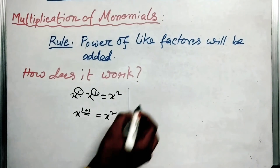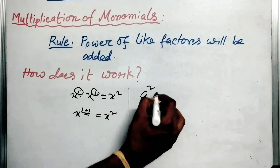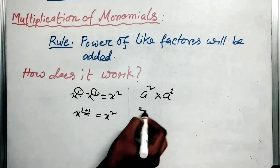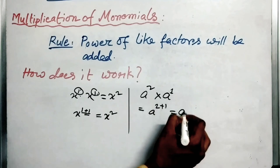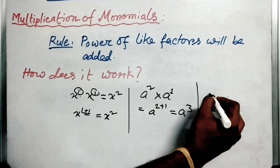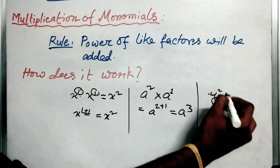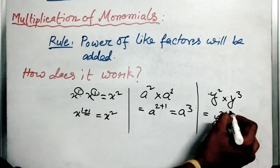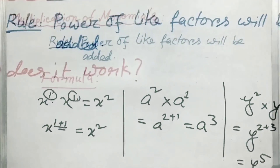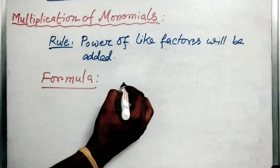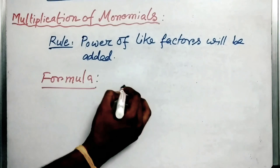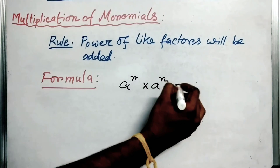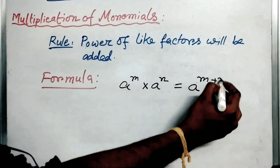Similarly, if we take x squared into a, then a has power 1, so it is a to the power 2 plus 1, which is a cubed. Now if we multiply y squared into y to the power 3, it will be y to the power 2 plus 3, which is y to the power 5. Therefore the formula is: a to the power m multiplied by a to the power n equals a to the power m plus n.